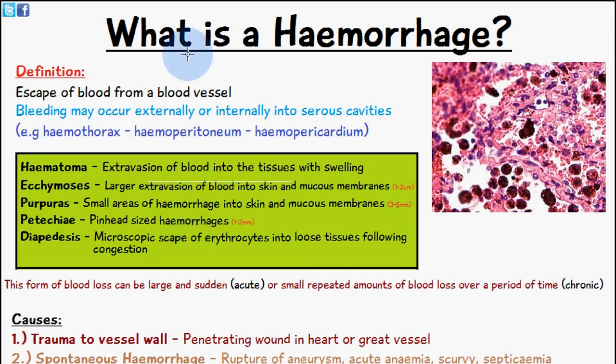You can have internal hemorrhages or external ones. The external one would be when you cut yourself on your finger and blood leaks out. Internally, blood can leak into some cavities — some serious cavities — and examples include hemothorax, hemoperitoneum, and hemopericardium.